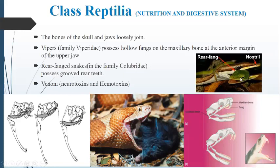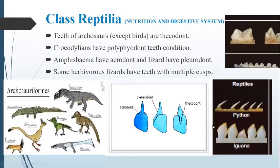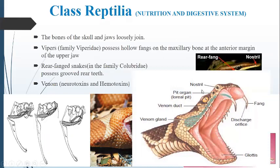Some snakes have real fangs and some snakes don't. Real fangs here are present as grooves. You can see this is the mouth of a viper and this is the fang. You can see here there is a venom gland — the venom gland has the capability to secrete venom.